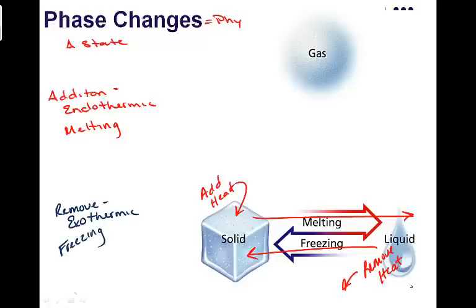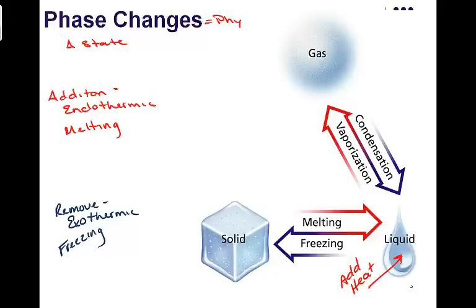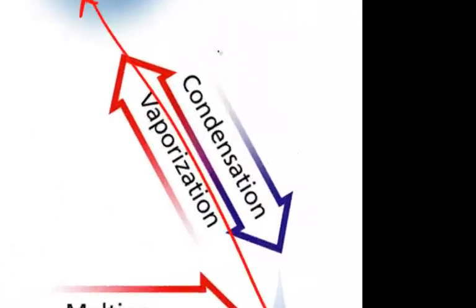Now if we take our liquid and we add heat to our liquid, that liquid can become a gas and it undergoes vaporization. If we cool off or remove heat from a gas, it's called condensation. So vaporization is endothermic and condensation is exothermic. Condensation is the reason that cool drinks sweat when it's warm out.